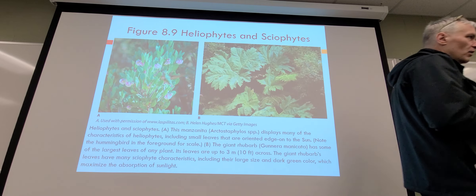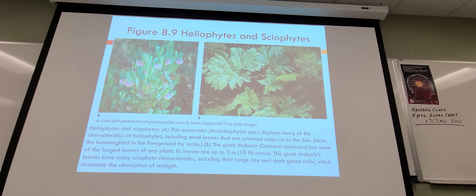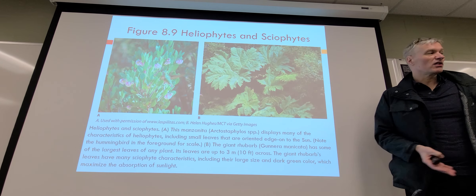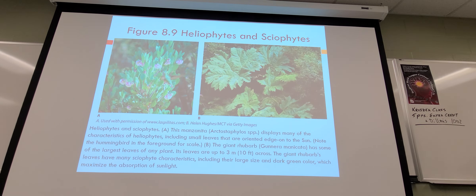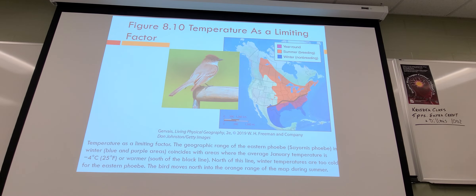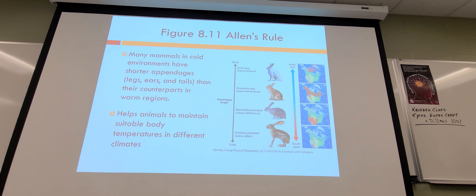A couple of different adaptive mechanisms: plants in warmer climates may have leaves pointed to avoid direct sunlight, while plants that want more sunlight will be flatter and often a darker color of green. Darker colors absorb more sunlight — remember the albedo effect, where lighter things reflect more sunlight and darker things absorb more. There are also a couple of rules when it comes to animals.